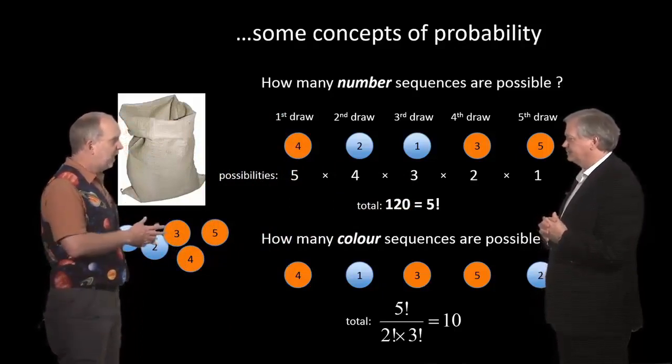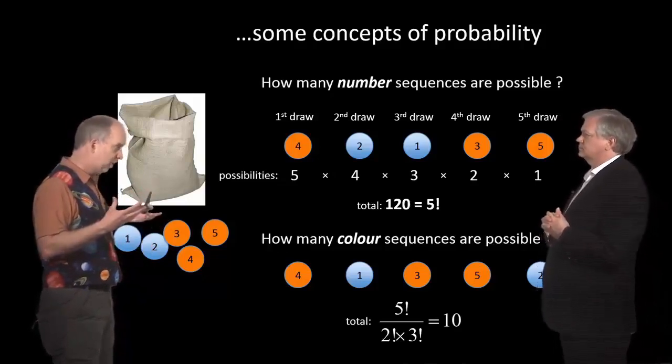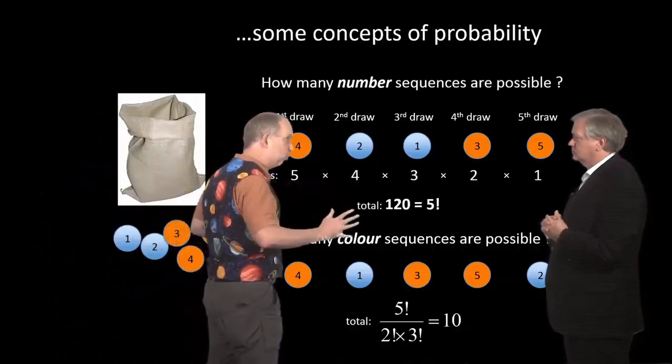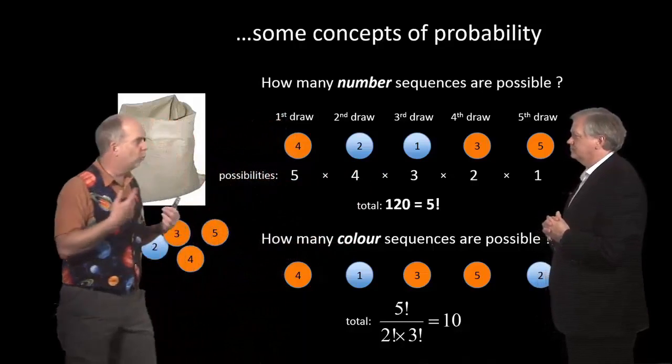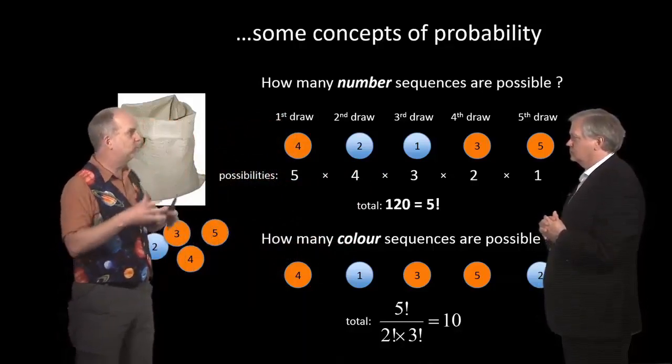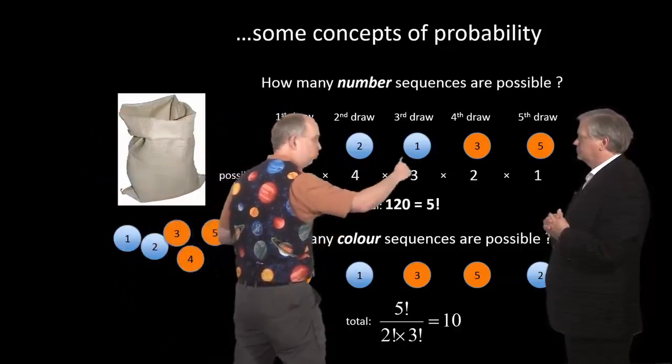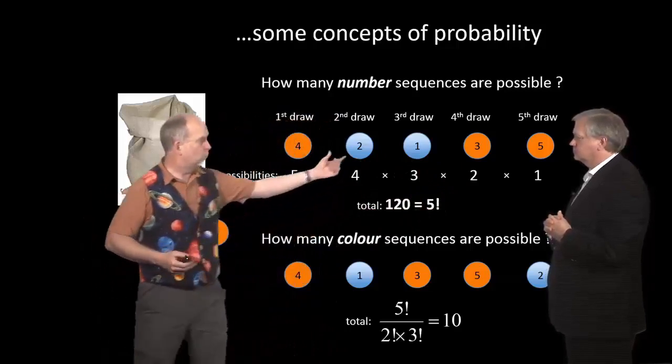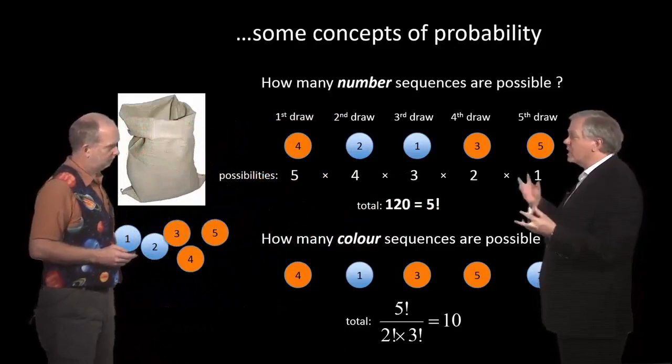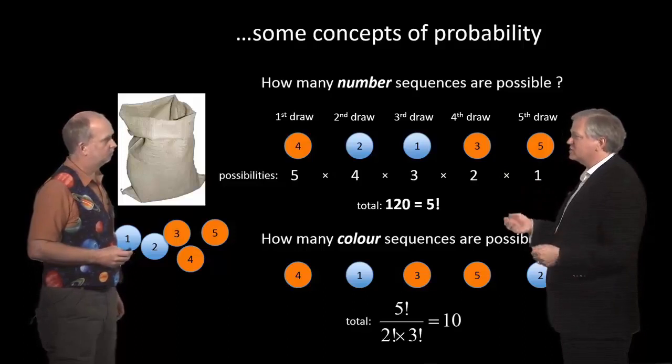But let's say we now rub the numbers off the balls. So we don't actually care whether blue ball number one came out first or blue ball number two. All we care is it was a blue ball. So we no longer care which order the red balls are in or the blue ones. We just care about how many sequences of red and blue you're going to get. So we're going to group into groups of two and three—that is two blue balls, three red balls, and there's five in total.